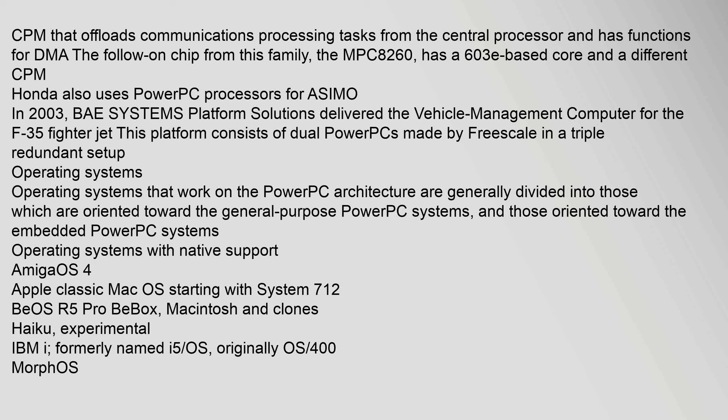Operating systems that work on the PowerPC architecture are generally divided into those oriented toward general-purpose PowerPC systems and those oriented toward embedded PowerPC systems. Operating systems with native support include AmigaOS 4, Apple Classic Mac OS starting with System 7.1.2, BeOS R5 Pro, BeBox Macintosh and Clones, Haiku (Experimental), and IBM i (formerly named i5/OS, originally OS/400).